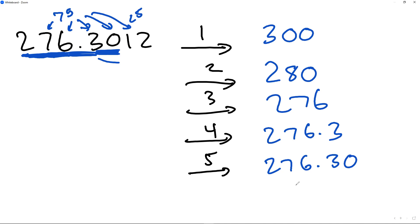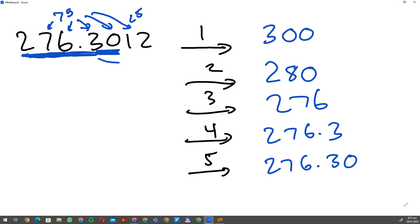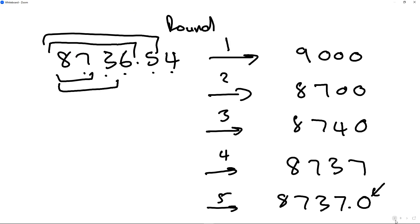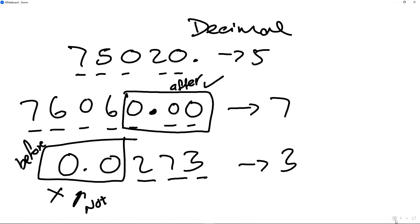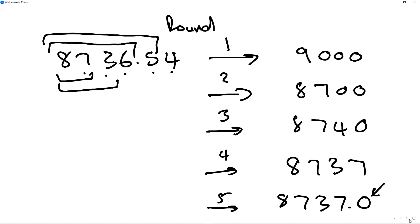There's a question: wouldn't 276.30 only count as five sig figs because the last number is zero? Let's double-check — when a zero is at the end after a decimal, it is significant. It's only when zeros come before non-zero digits after a decimal that they're not significant. So 276.30 is correctly five significant figures.